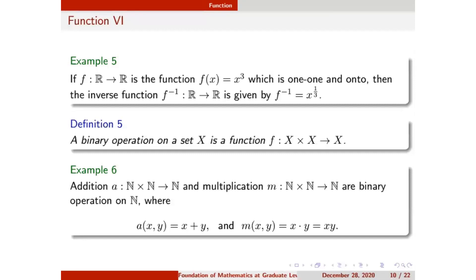Think of the graph of the cubic function: it is an S-shaped curve passing through the origin from negative to positive. To verify a function is one-to-one and onto on a graph, we draw a horizontal line. If it cuts the graph at only one point, the function is one-to-one. For a square function, the parabola opens toward the y-axis, and a horizontal line cuts it at two points — so it is not one-to-one. But for x cubed, the S-shaped graph is cut at only one point, so it is both one-to-one and onto — a bijection — and we can find its inverse.